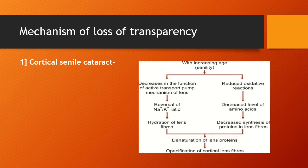Coming to the mechanism of loss of transparency — in cortical cataract, with increasing age there is decrease in the function of the active transport pump mechanism of the lens, that is the sodium-potassium pump, which keeps the dehydrated state of the lens. There is a reversal of this sodium-potassium pump, due to which there is hydration of the lens fiber, which leads to denaturation of lens proteins and opacification of the cortical lens fiber. There is also reduced oxidative reaction, which leads to decreased synthesis of proteins in the lens fiber, also causing opacification. In nuclear cataract, there is intensification of isolated nucleus sclerosis, associated with dehydration and compaction of the nucleus leading to hard cataract. There is also significant increase in water-insoluble protein, and sometimes deposition of pigment urochrome or melanin derived from amino acids in the lens.